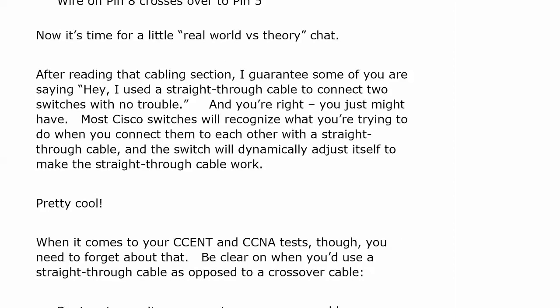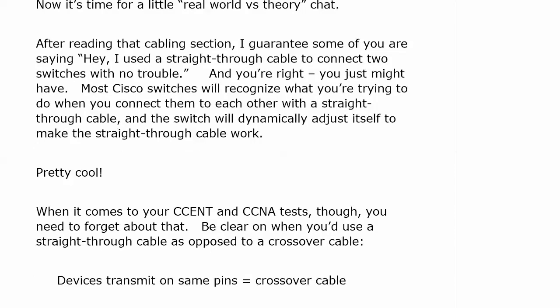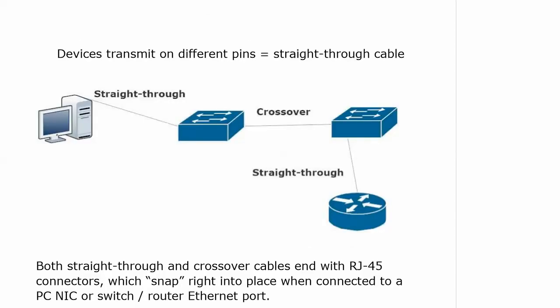Be clear: if devices transmit on the same pins — meaning they're the same device type — you use a crossover cable. If they transmit on different pins, you use a straight-through cable. I've added a router here because you will use a straight-through cable for a switch-to-router Ethernet port connection. Regardless of which type of cable you're using, these end with RJ45 connectors that snap right into place when connecting to a PC network card or a switch or router Ethernet port. You might not hear the click but you'll feel it.